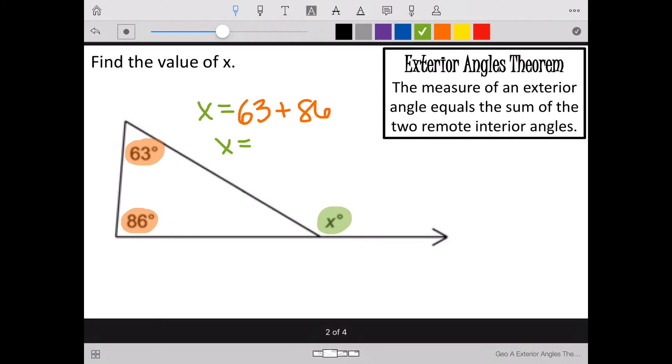So let me grab my calculator real quick. 63 plus 86 makes 149. So x equals 149 degrees.